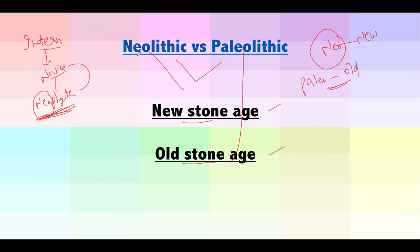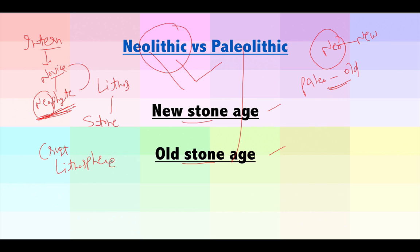Another important thing: the suffix '-lithic' comes from the Greek word Lithos, which means stone. That is why the outermost part of the Earth's crust is called the Lithosphere — it is made up of hard rocks and stones. So new stone age is Neolithic and old stone age is Paleolithic.